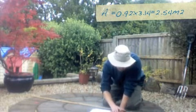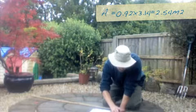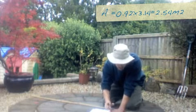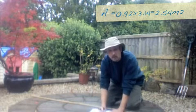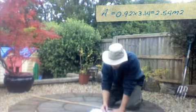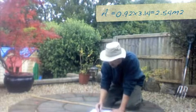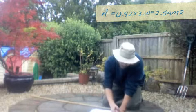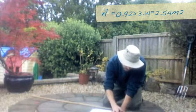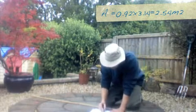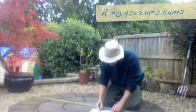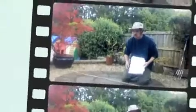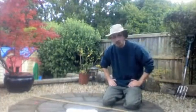The radius is 90 centimetres or 0.9 of a metre. We need to square that and times it by pi — pi r squared — to work out the area of the circle. So 0.9 squared, that is 0.9 times 0.9, gives us 0.81. We then times that by pi: 0.81 times 3.14 equals 2.54 metres squared. So I now have all the information I need to go and order my attractive new patio.